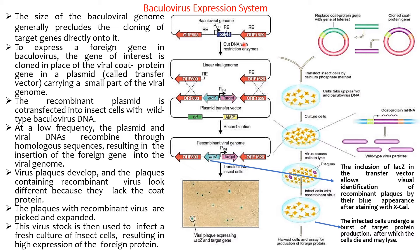Cell lines such as Sf9 and Sf21 are readily cultured in the laboratory. The genome of the baculovirus generally precludes the cloning of target genes directly into it. Therefore, to express a foreign gene in baculovirus, the gene of interest is cloned in place of the viral coat protein gene in a plasmid called the transfer vector, which carries a small part of the viral genome.